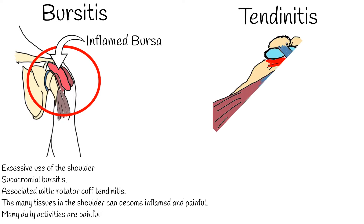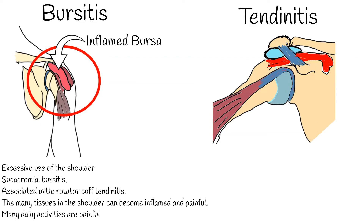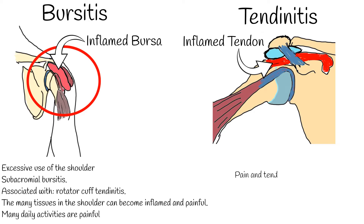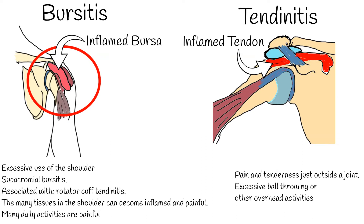Tendinitis. A tendon is a cord that connects muscle to bone. Most tendinitis is a result of inflammation in the tendon. The condition causes pain and tenderness just outside a joint. Tendinitis can be caused by excessive ball throwing or other overhead activities during work or sport, which can lead to acute tendinitis.